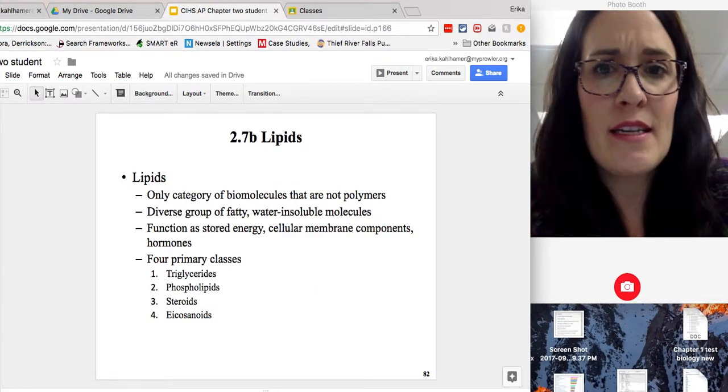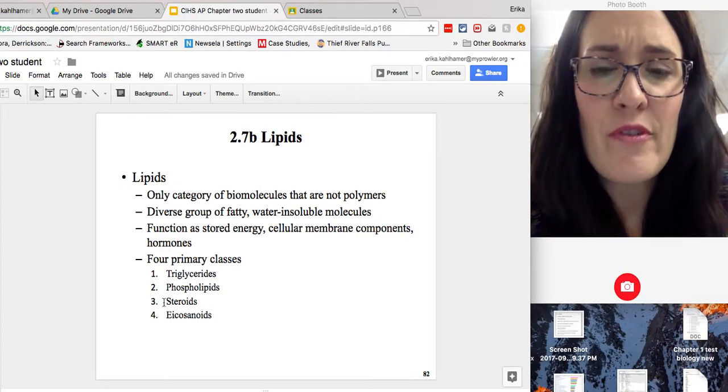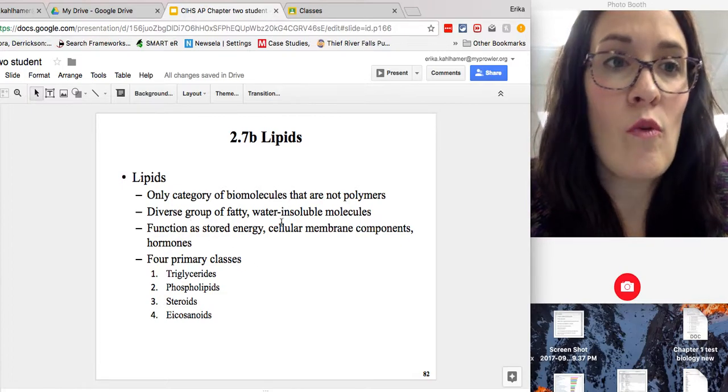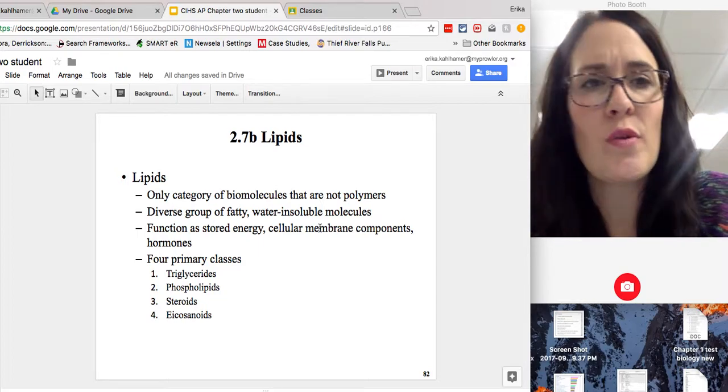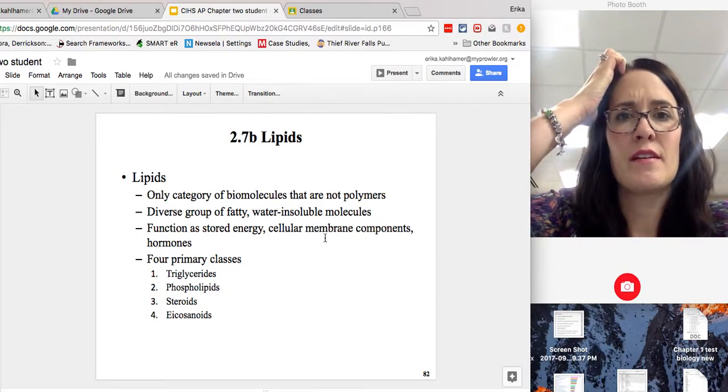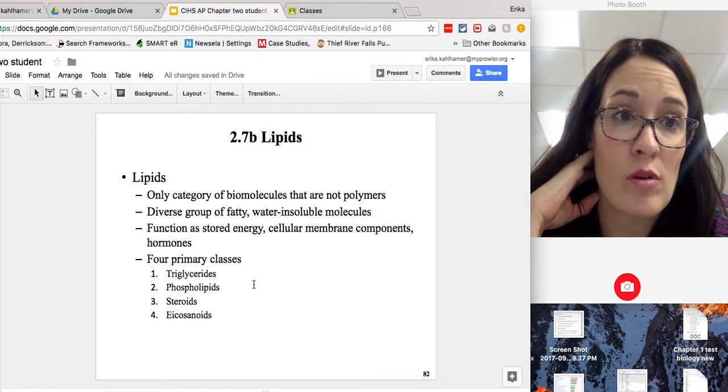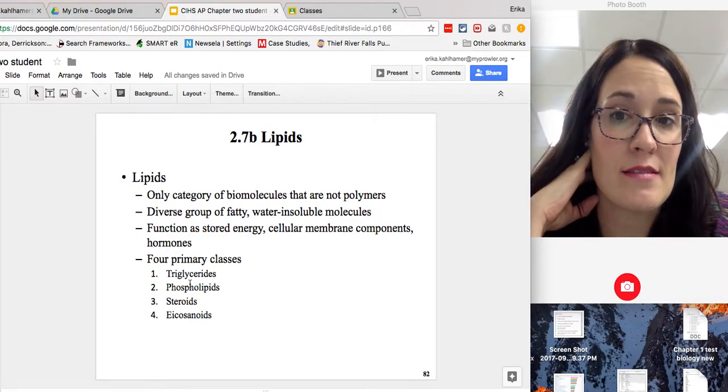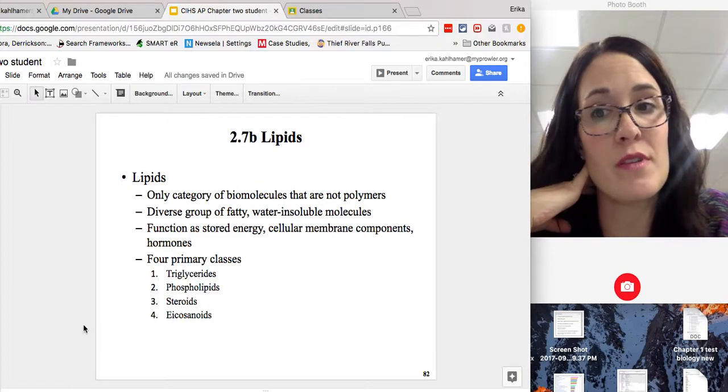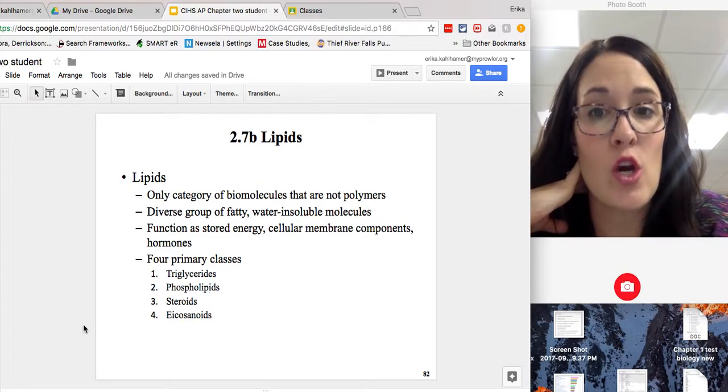Lipids are technically not a polymer. They're very diverse. They're water insoluble. They don't mix with water. What do we need lipids for? To store energy. They're important parts of your cell membranes and hormones. Four primary classes: triglycerides, phospholipids, steroids, and eicosanoids.